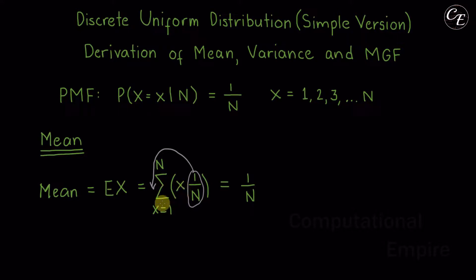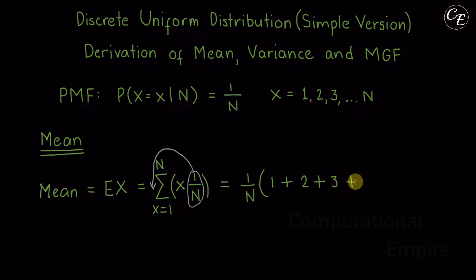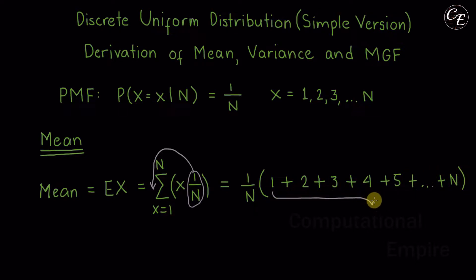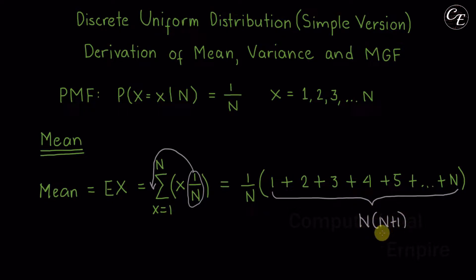So we have 1 over n times the summation of x from x equal to 1 to n. When we expand: 1 + 2 + 3 + 4 + 5 + ... + n. This is a sum of an arithmetic progression, which from algebra has the formula n times (n+1) over 2.